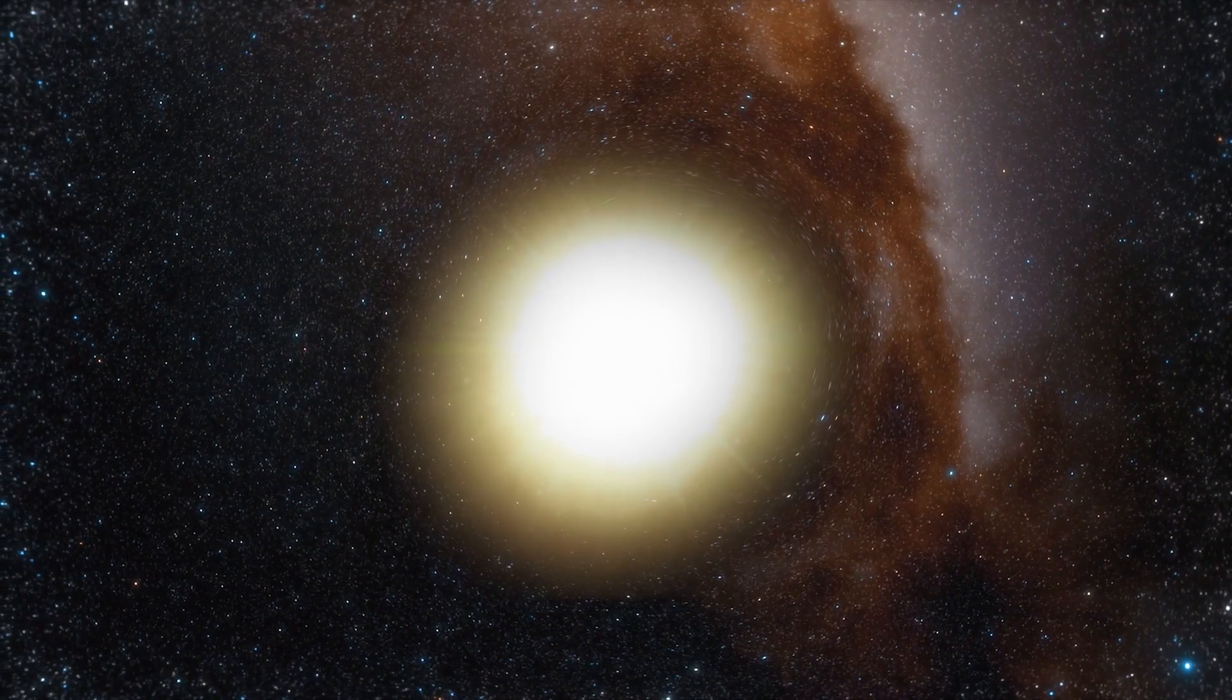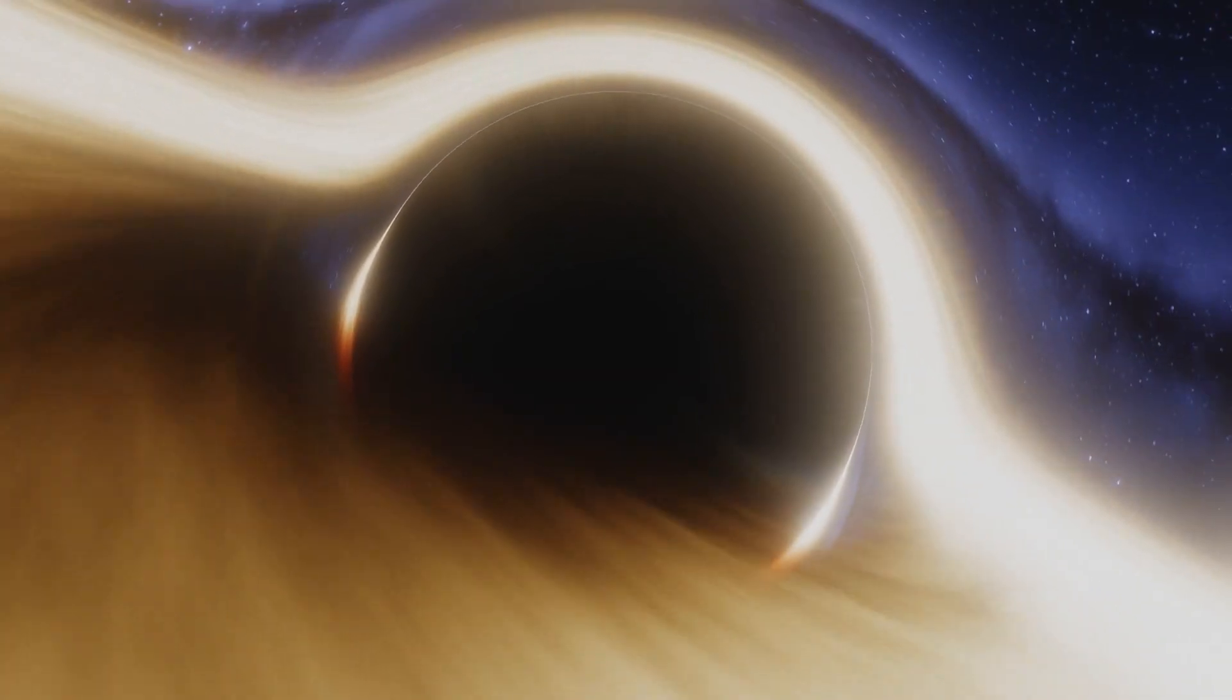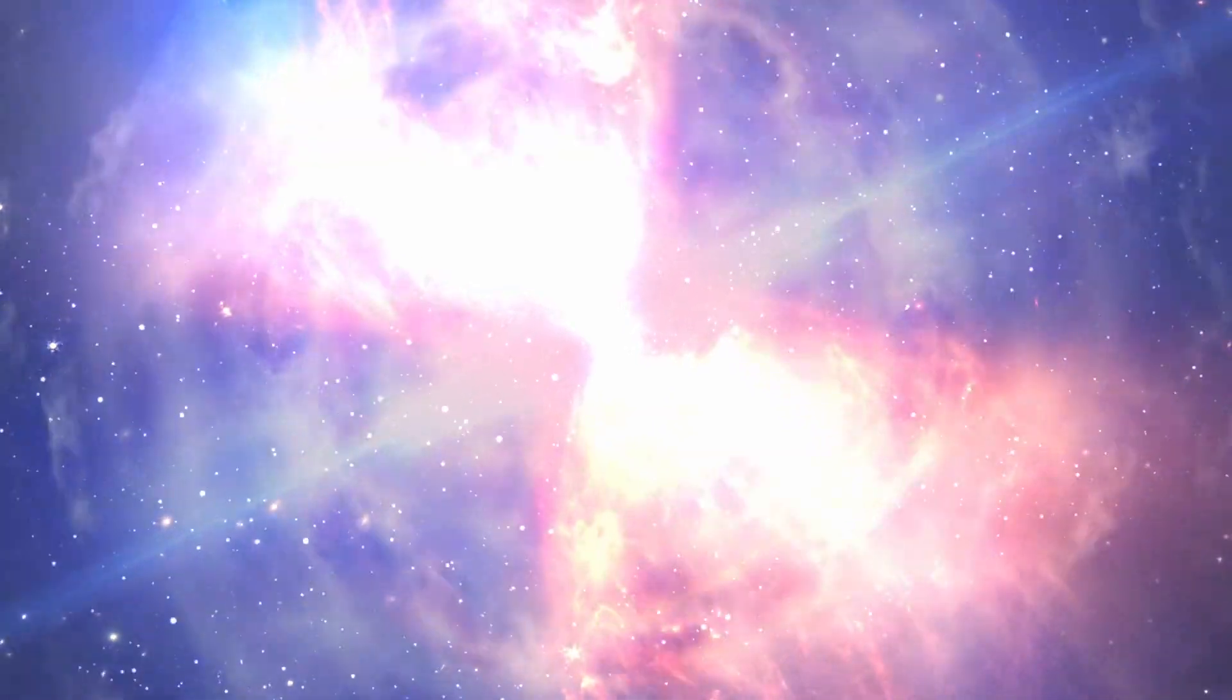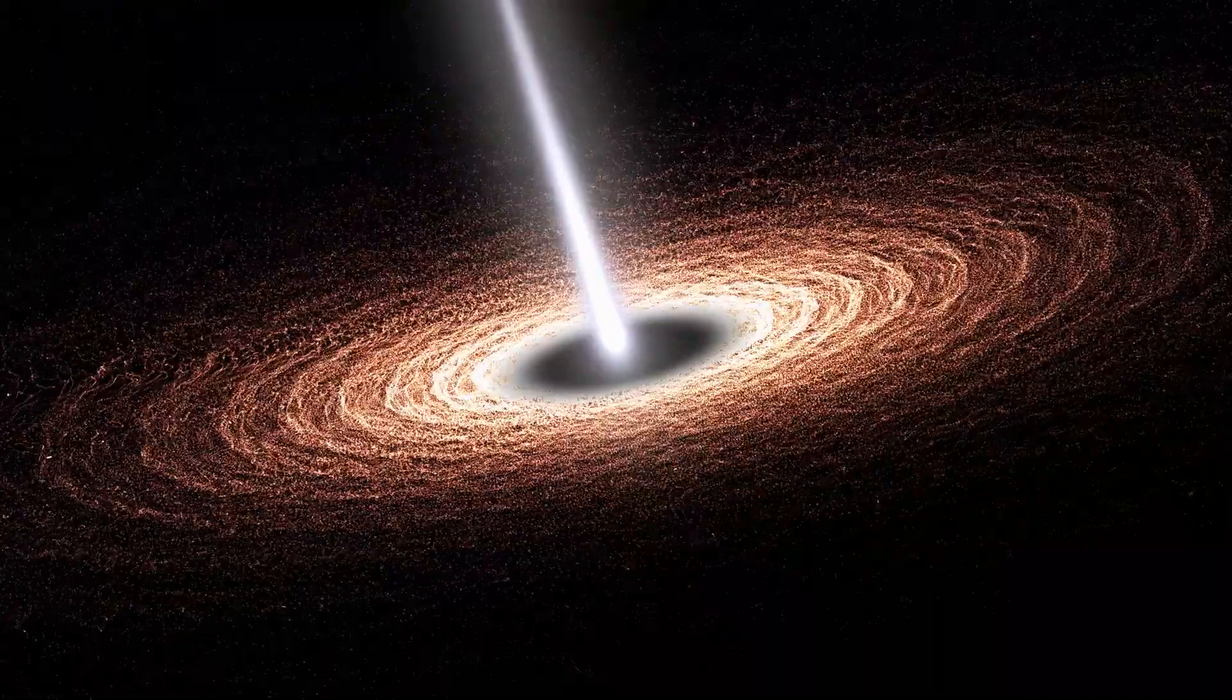Black holes go from masses ranging from a few times to billions of times that of the Sun. They need extreme compression to form. A massive star goes supernova, and its core is compacted so tightly under the gravitational collapse that an object with incredible density is born. An object from which nothing, not even light, can escape.